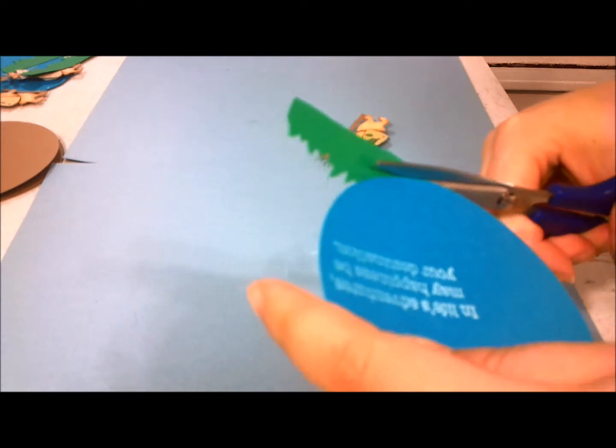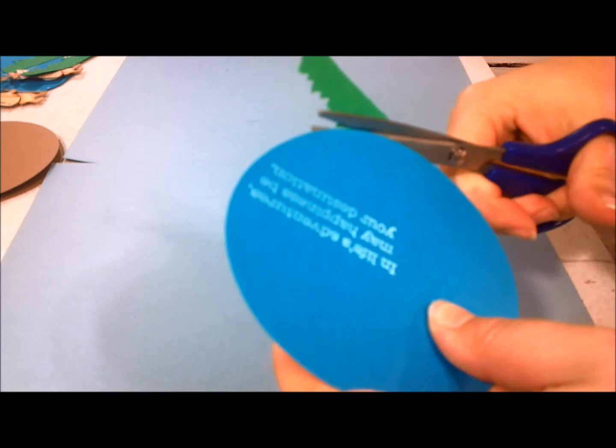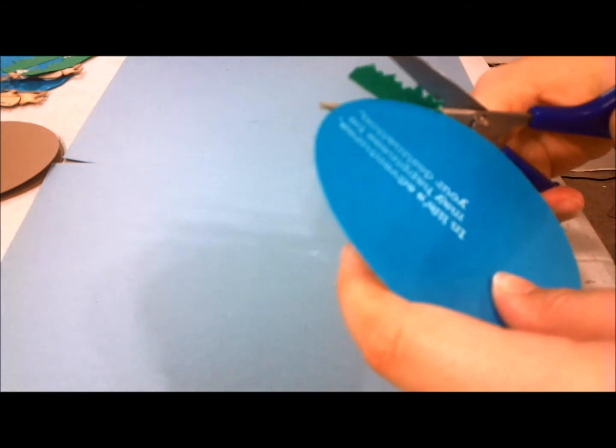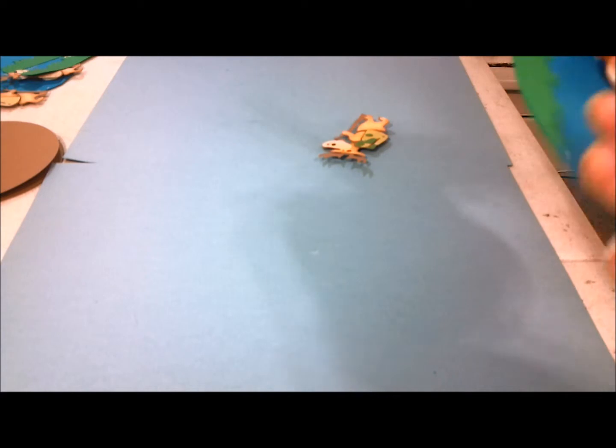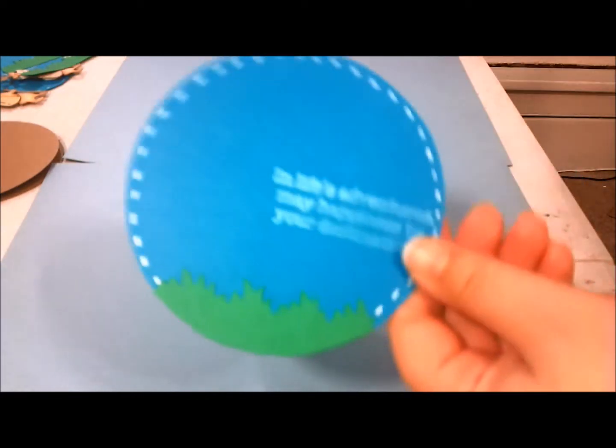You just cut around the circle and make sure you don't cut the actual circle. And then it's going to look like this.